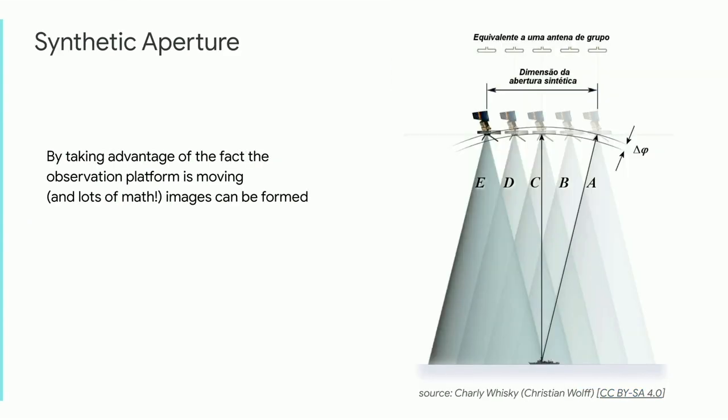There is the idea of the synthetic aperture: you take advantage of the fact that the antenna is moving along, basically perpendicular to whatever you're looking at. Because of that movement and a lot of math, you can actually simulate a larger aperture, giving you more sensitivity and higher resolution images on the ground. The radars you generally see on aircraft and satellites are known as synthetic aperture radars — they're taking advantage of the movement in terms of processing and forming images.